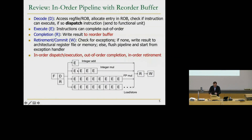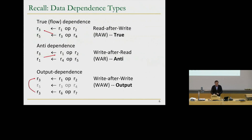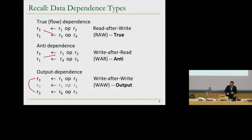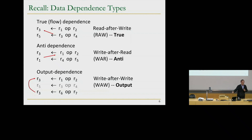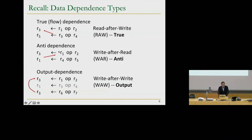We've already built this pipeline, and recall the data dependence types. We've now eliminated anti- and output dependencies. We're making the system look more like data flow underneath. In data flow, there are no registers — it's all about producing data and having a consumer of data. Anti- and output dependencies have no real producer-consumer relationship; the instructions are just connected because they happen to reference the same register name. The value in the register is completely different — it's just a name, and as a result, we can eliminate these dependencies easily.